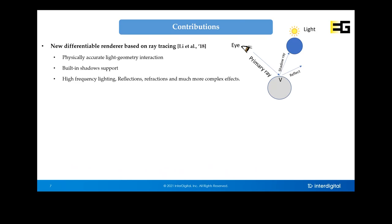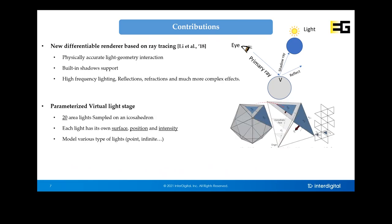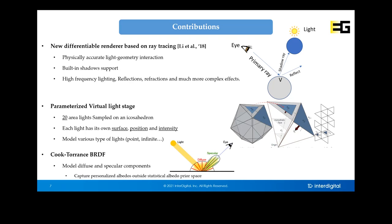Our goal is to achieve better light representation to handle shadows properly and a better skin reflectance model. The main contributions are: first, we introduce ray tracing for face reconstruction for the first time — ray tracing naturally models light-geometry interaction with built-in shadow support and handles high-frequency lighting using a differentiable ray tracer. Second, we introduce a novel parameterized virtual light stage composed of 20 area lights sampled on an icosahedron, each with optimizable position, surface, and intensity parameters. Third, we capture personalized diffuse and specular albedos outside the statistical albedo prior space while being robust against shadows.